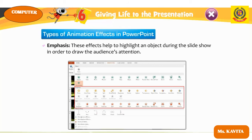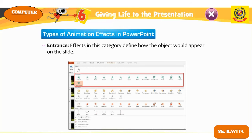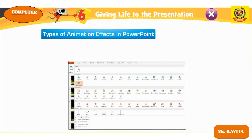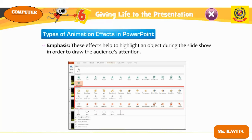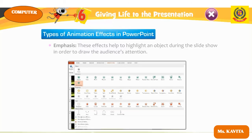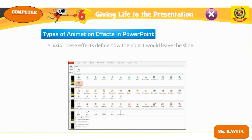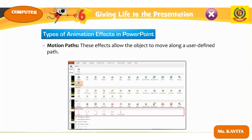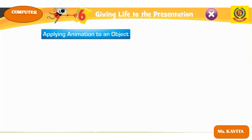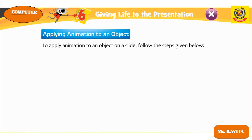The four categories are: first, Entrance Effect — defines how objects appear on the slide; second, Emphasis — highlights objects during the slide show to draw audience attention; third, Exit — defines how objects leave the slide; and fourth, Motion Path — allows the object to move along a user-defined path.